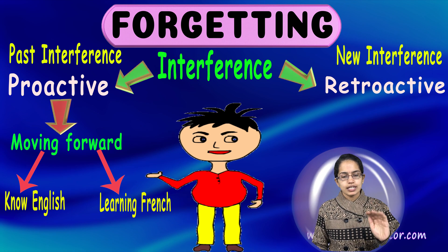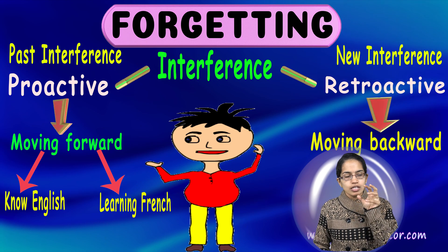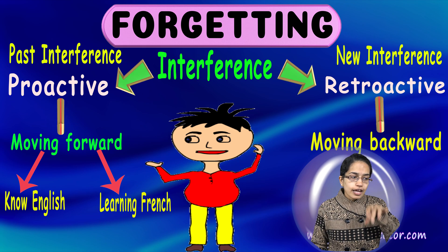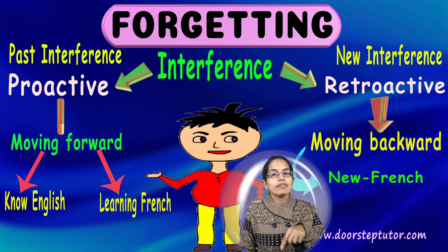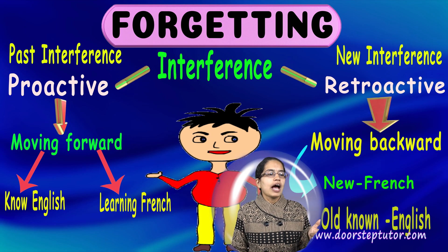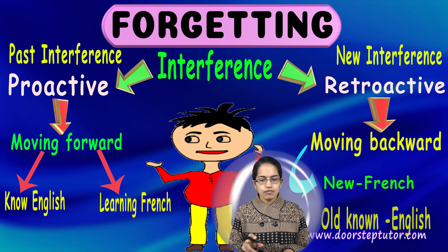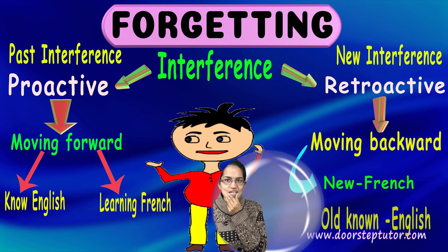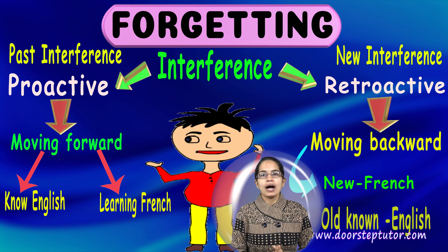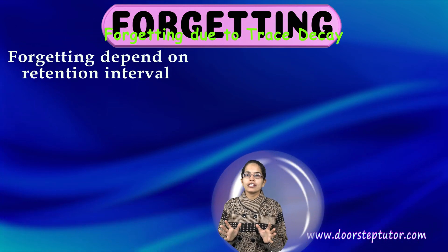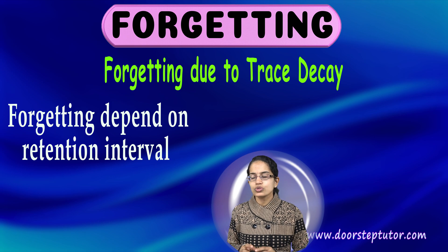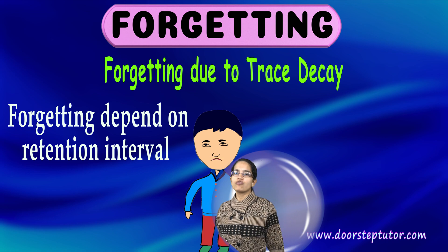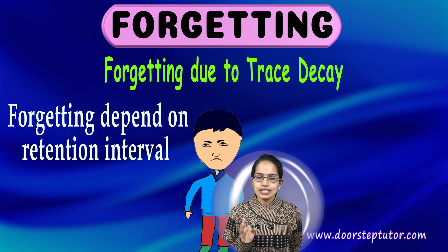Retroactive interference means new learning is interfering with past learning. If I am now learning French, whatever was learned for English is pushed out of mind because this new French learning interferes with my previous learning — that is retroactive interference. The next is forgetting due to trace decay, which is a 'use it or lose it' theory. Since you have not been using a concept for long, you start to forget it — that is trace decay.